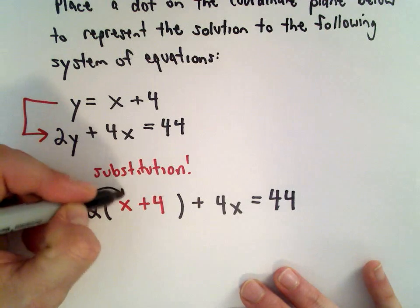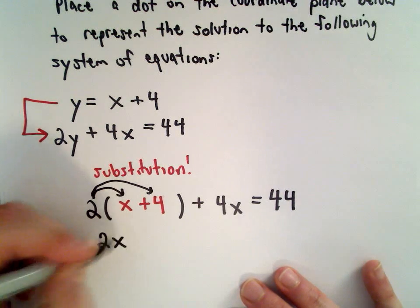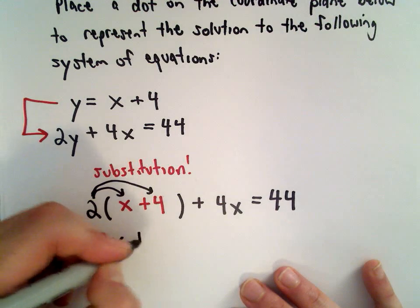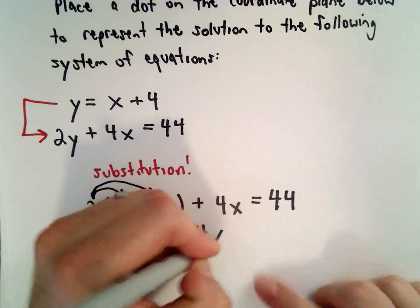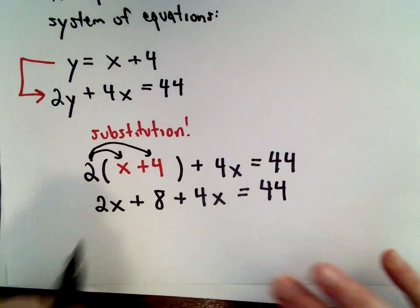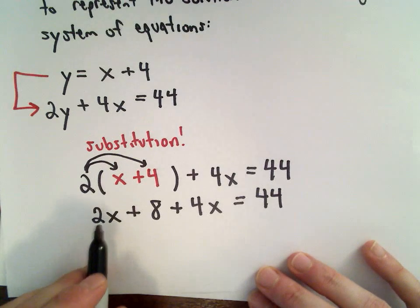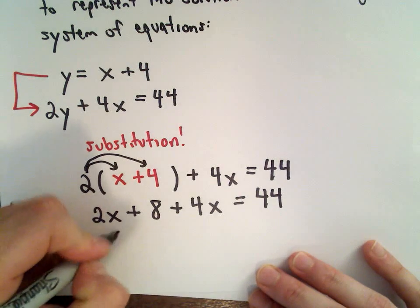The first thing I'm going to do is get rid of the parentheses by distributing. So 2 multiplied by x is 2x, 2 multiplied by positive 4 is positive 8. We still have positive 4x equals 44 left over. Combining like terms on the left side, we have 2x plus 4x, which gives me 6x.